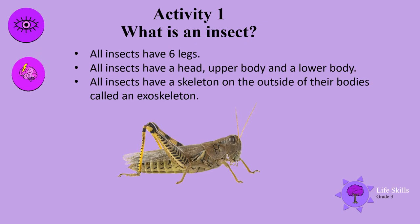What is an insect? Hopefully you know this by now, boys and girls. Let's go through it as revision. All insects have six legs. All insects have a head, upper body, and a lower body. All insects have a skeleton on the outside of their bodies called an exoskeleton. Look at this amazing grasshopper — you can see the body parts very clearly.